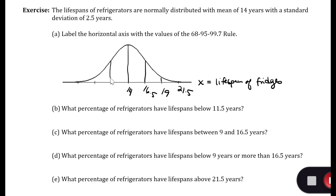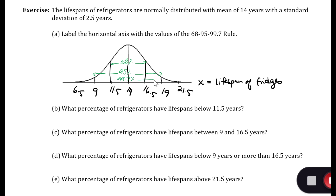Similarly, going below the mean, we go 14 minus 2.5, which is 11.5. Then 11.5 minus 2.5, which is 9. And then 9 minus 2.5, which is 6.5. We know that 68% are within one standard deviation of the mean, 95% within two standard deviations, and 99.7% within three standard deviations.